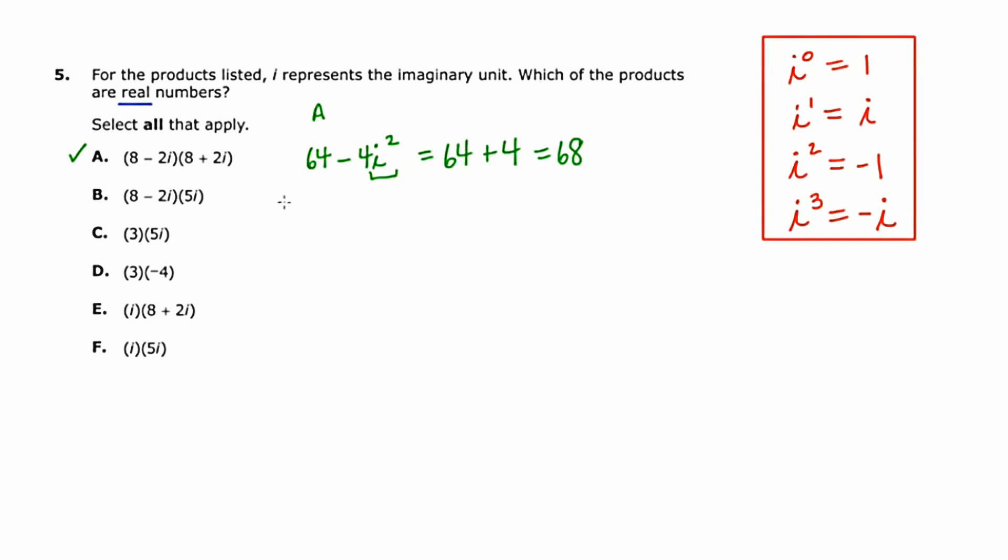Now let's go to a different color. Now I'm going to go to b, and this is just going to be distribution. So I'm going to distribute the five i through to both things, and let's see what I get. So to start, I'm going to get 40i, and then I'm going to end up with negative 10i squared. Now to review, i squared is negative one, and negative 10 times negative one is 10. So what I really have here is 10 plus 40i. And there's not going to be anything that makes that i go away. So this would be considered a complex number, which is not real. So b is not going to work.